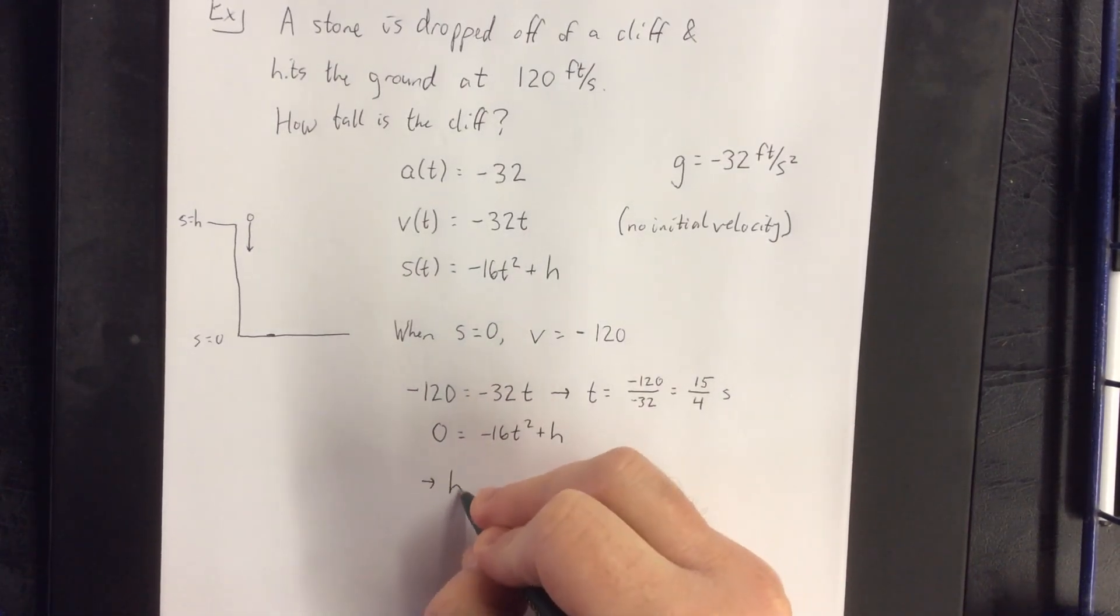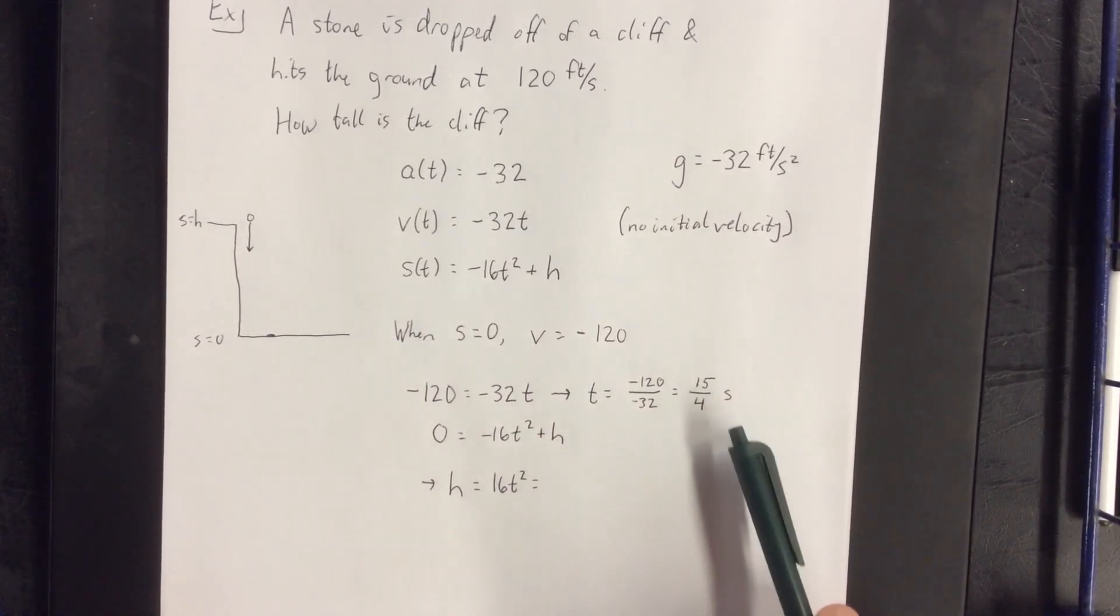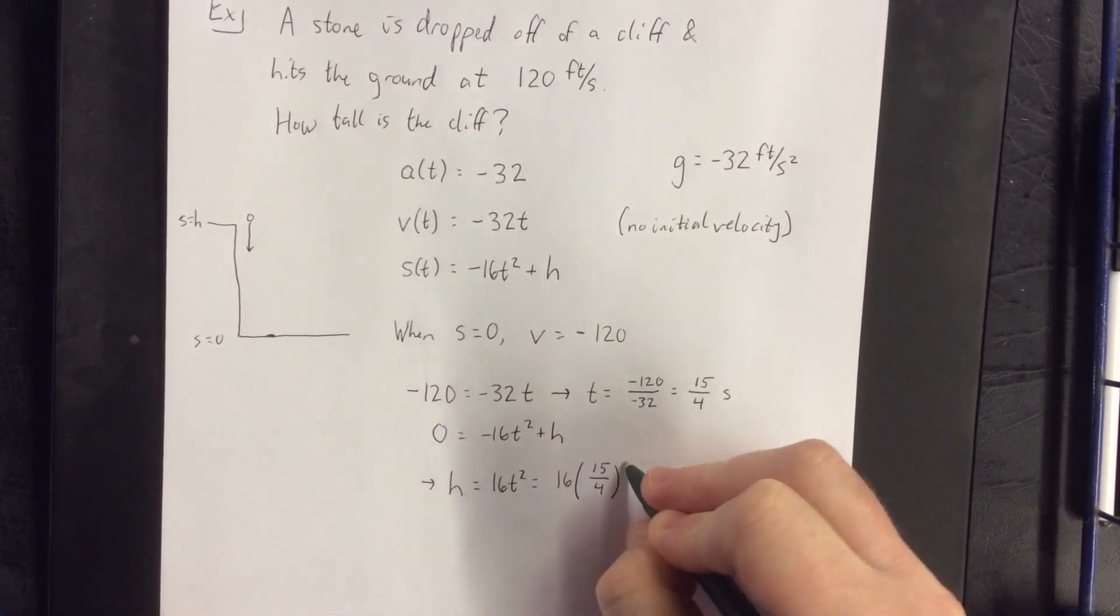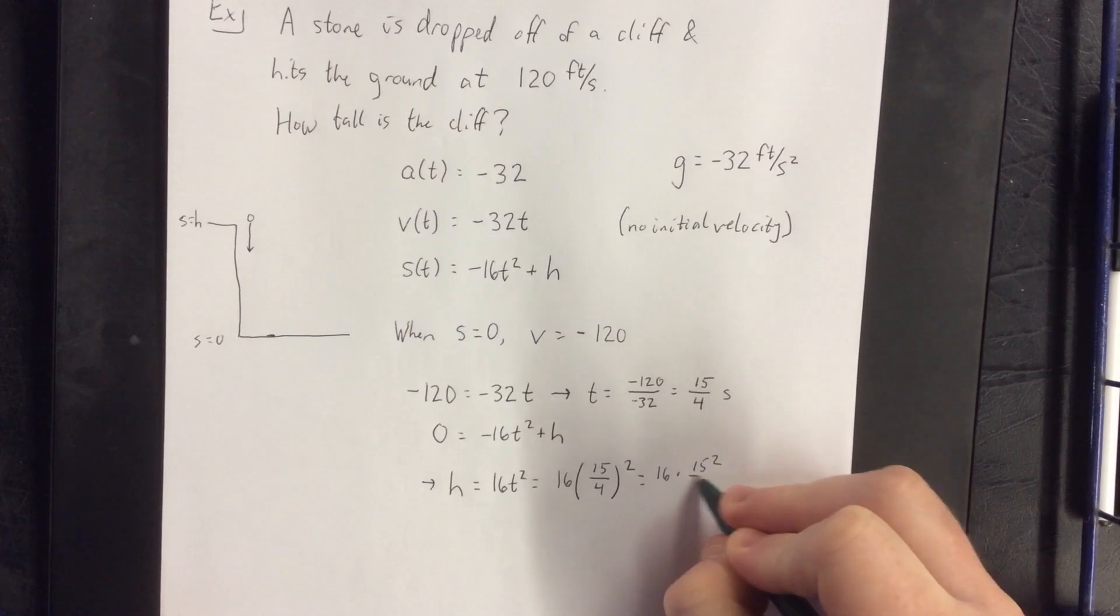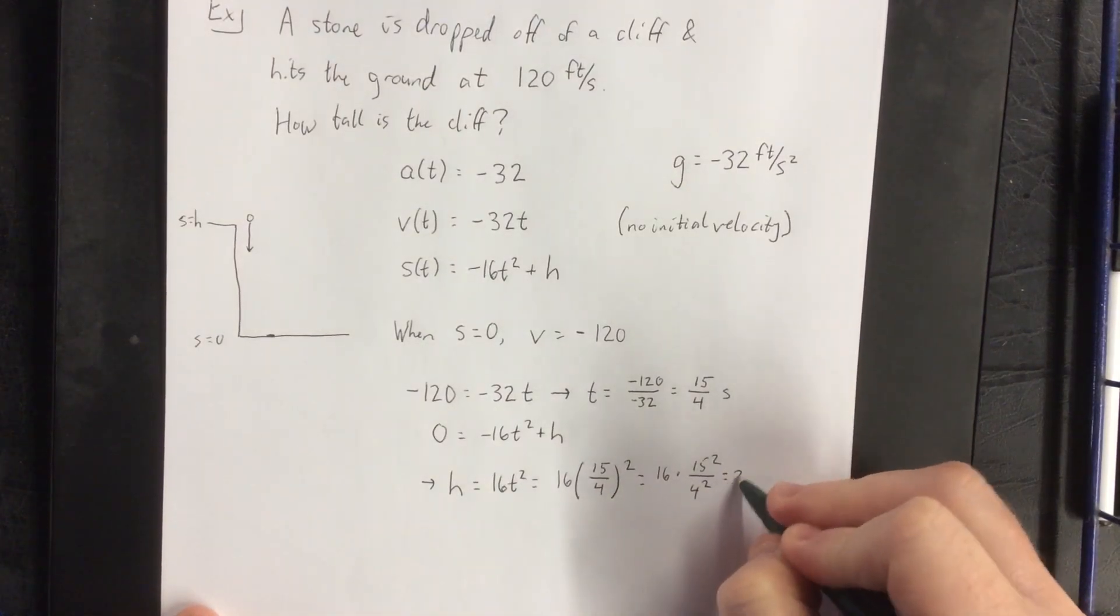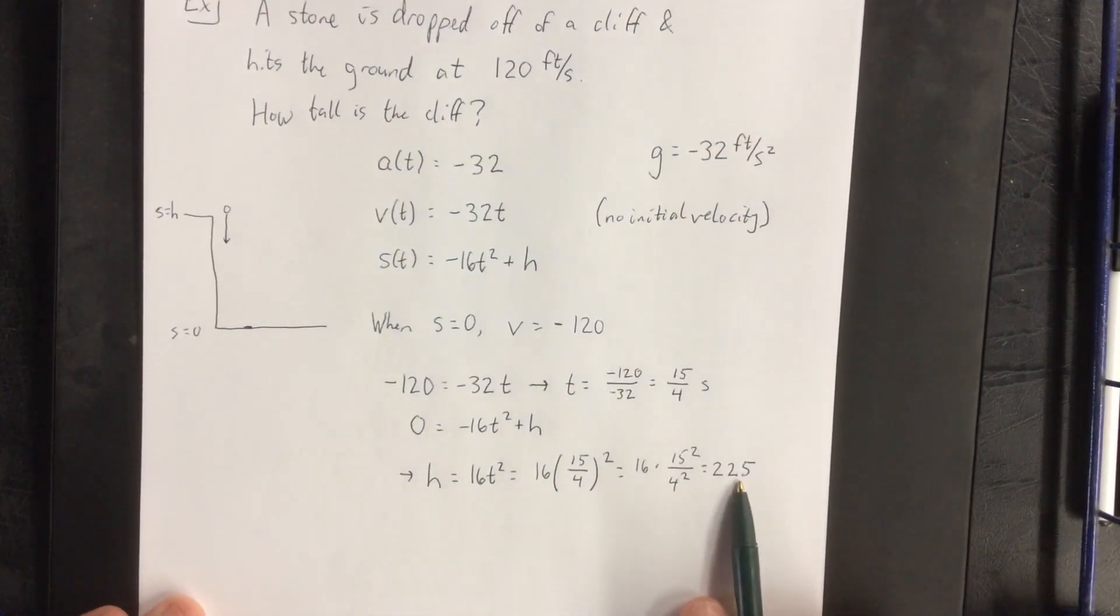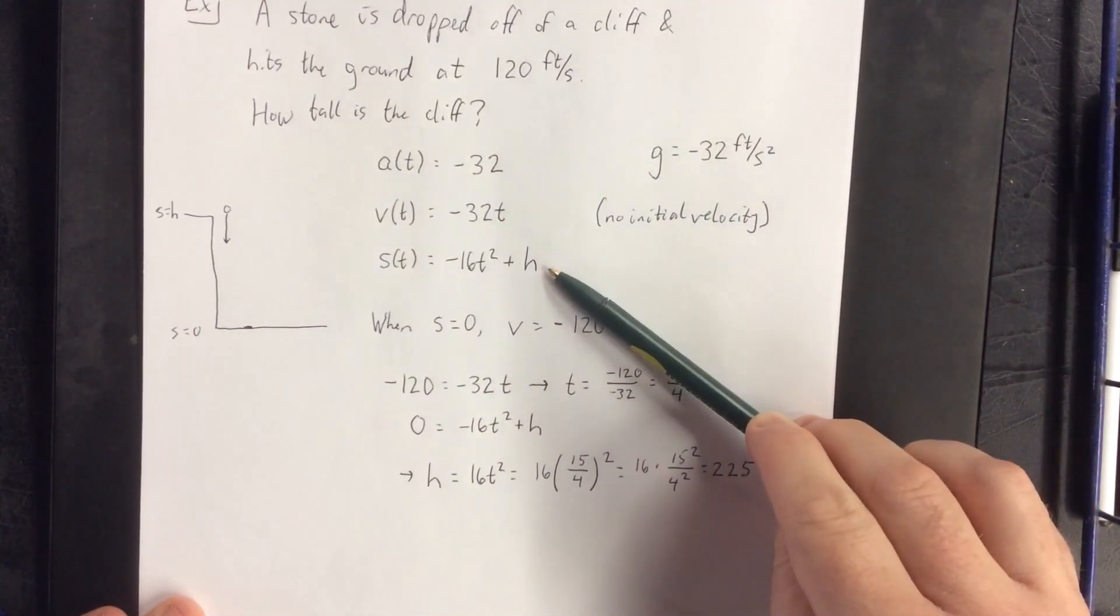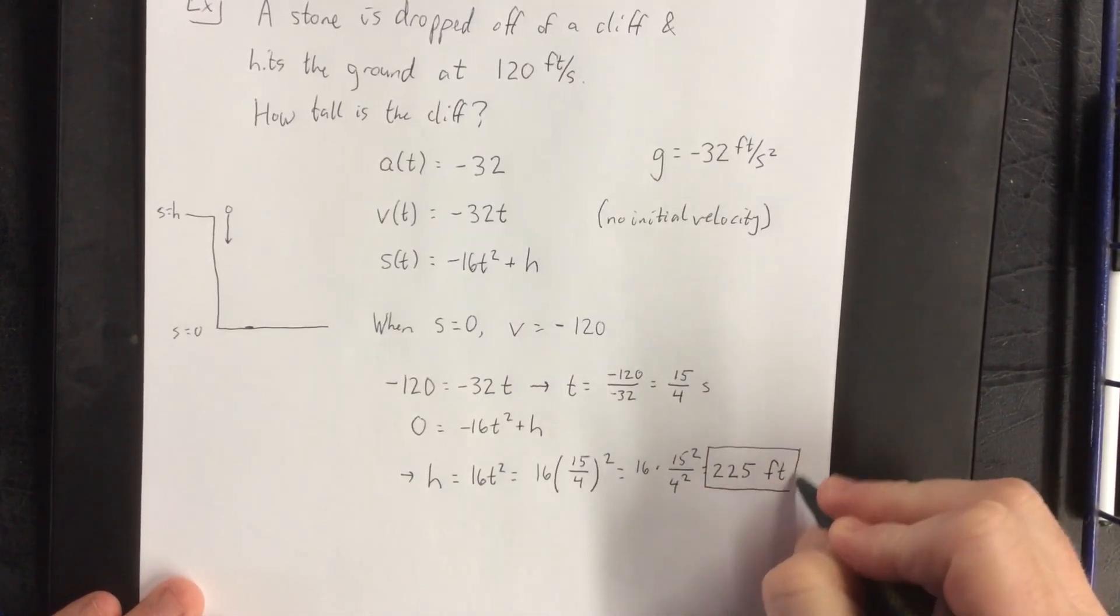If I solve this equation for h, I will get that h is equal to positive 16t squared. However, I now know what t value I can plug in. So this will be 16 times 15 quarters squared. That is to say, this will be 16 times 15 squared over 4 squared. But I also know that 4 squared happens to be 16. The 16s will cancel each other out. 15 squared is going to be 225. Because this was an application problem, we need units on our final answer. Because the velocity was given as feet per second, we're assuming that the position will have units of feet, time will have units of seconds. This was a position, therefore, 225 feet tall.